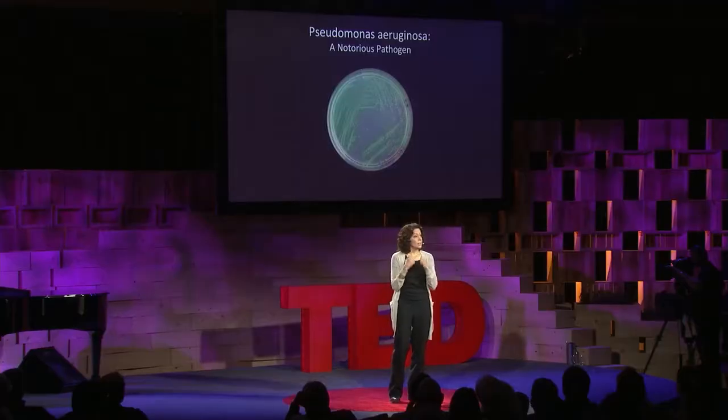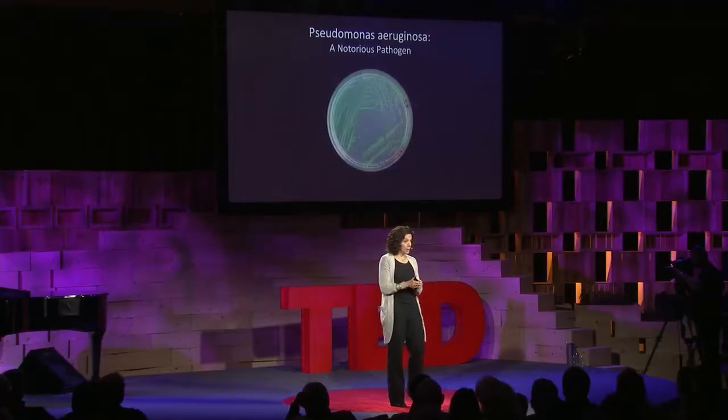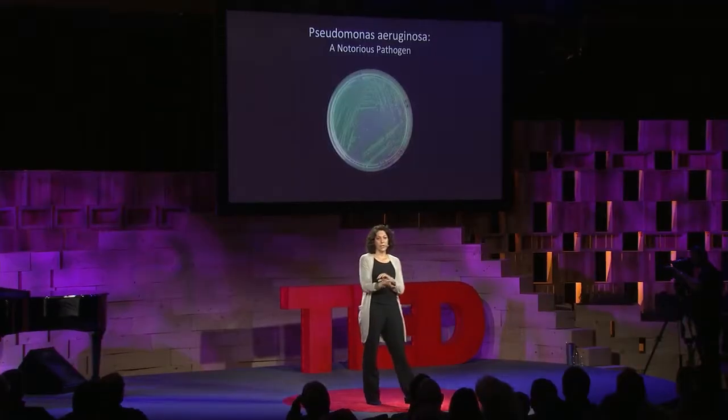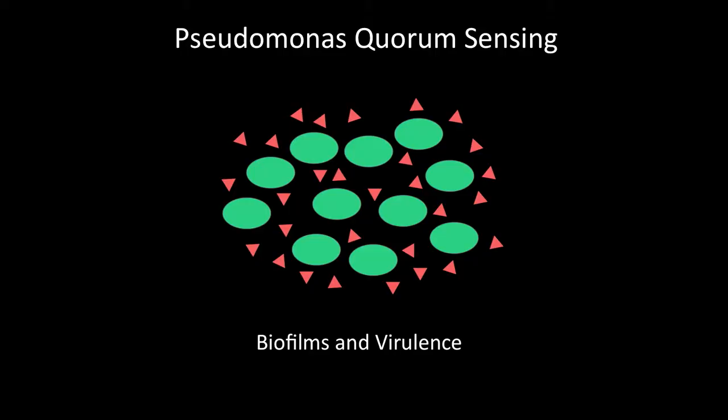The pathogen I'll tell you about is Pseudomonas aeruginosa. This is the bacterium that kills people who have cystic fibrosis, it kills immune-compromised people, and it causes infections when you get a catheter, a stent, or a breathing tube. The reason Pseudomonas is so virulent is because of this chemical communication — this quorum sensing.